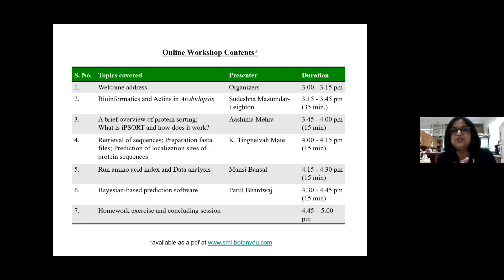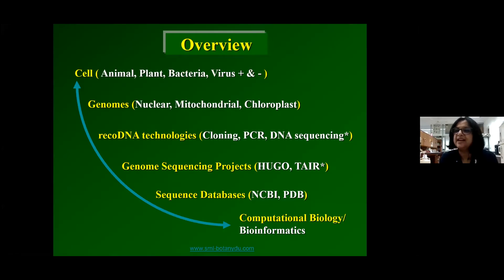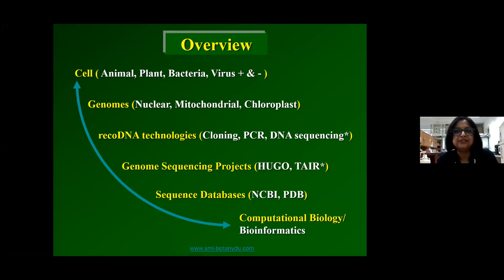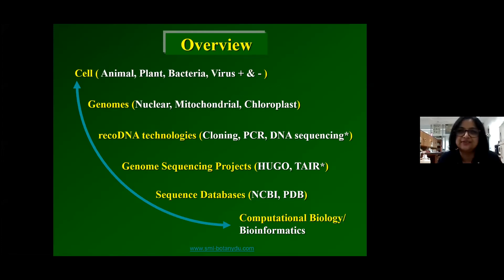I'm going to talk about bioinformatics and actins and Arabidopsis. Computational biology or bioinformatics enables us to look at different sequence data available in a cell. This field is very interdisciplinary. It can be animal, plant, bacterial, or viral. These genomes can be nuclear, mitochondrial, or chloroplast.